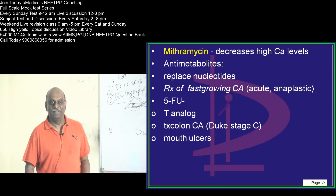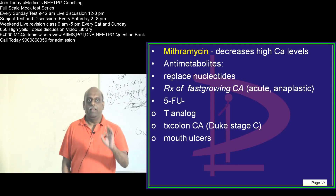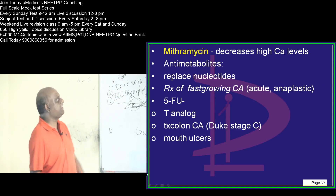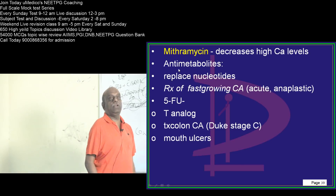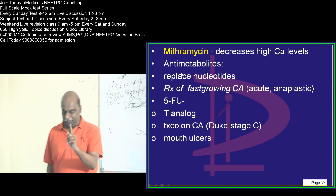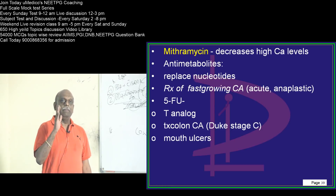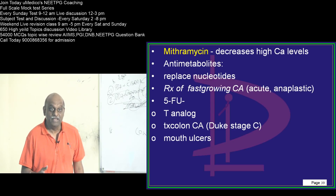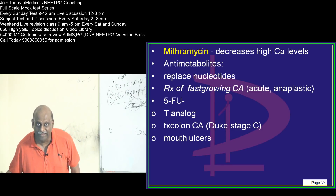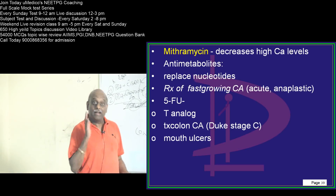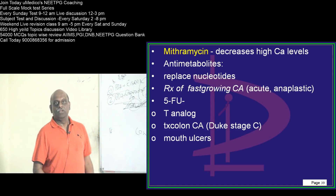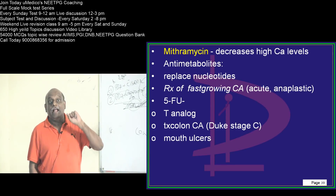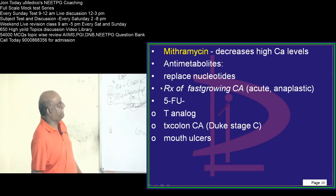Now, mithramycin — though it is a cancer drug, we still use it especially when there are very high calcium levels; if hypercalcemia is present, we use it to decrease calcium levels. Regarding antimetabolites, remember one important principle: if malignant cells are slowly multiplying, the drug of choice is an alkylating agent. If cancer cells are fast growing, antimetabolites are considered the treatment of choice. So in acute malignancies and anaplastic malignancies where cells are rapidly proliferating, anti-metabolite anti-cancer agents are the drug of choice.